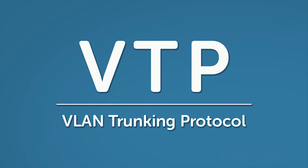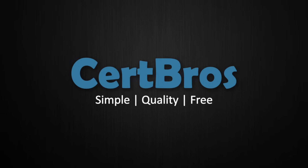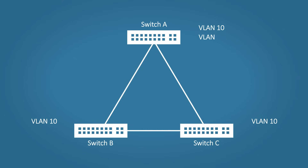Welcome to Cert Bros. In this video we're going to be talking about VLAN Trunking Protocol. VTP for short is a cool little feature that allows your switches to synchronize their VLAN configuration. Without VTP, if you wanted to configure a new VLAN you would need to connect to each individual switch and type it in manually. With only three switches that's not a big problem, but imagine you have a hundred switches and a hundred VLANs — that is a lot of work. With VTP, all we have to do is configure the VLAN on one switch and the others will synchronize and create the VLAN for us.